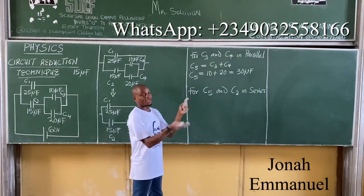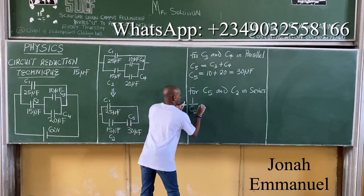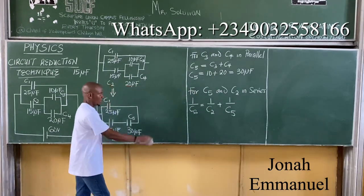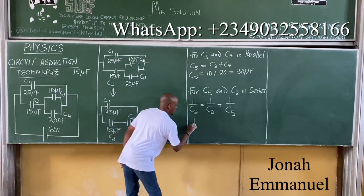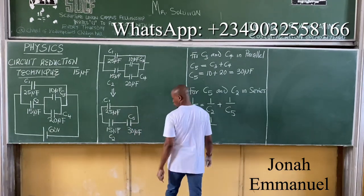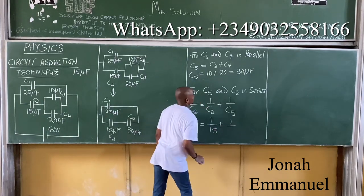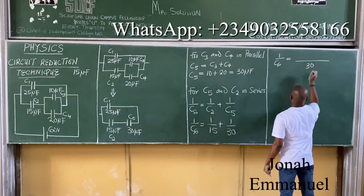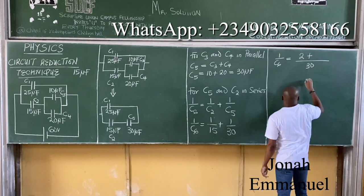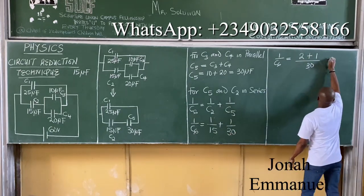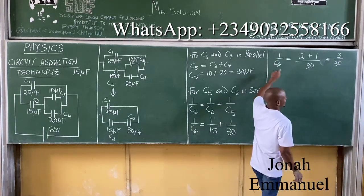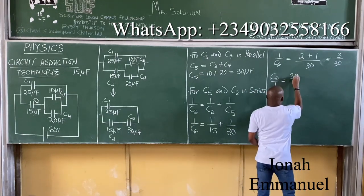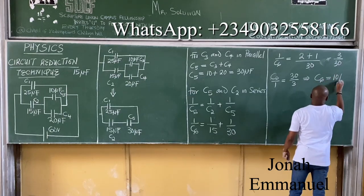For series arrangement, we take the inverse: 1/C6 = 1/C2 + 1/C5, that is 1/15 + 1/30. With LCD of 30: that gives 2/30 + 1/30 = 3/30. Therefore C6 = 30/3 = 10 microfarad.